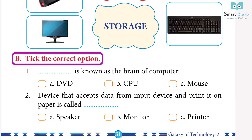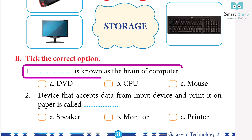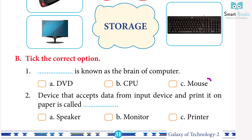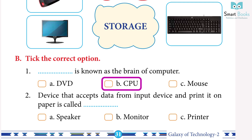Tick the correct option. Question 1: which is known as the brain of the computer? A. DVD, B. CPU, C. Mouse. Answer: B. CPU.